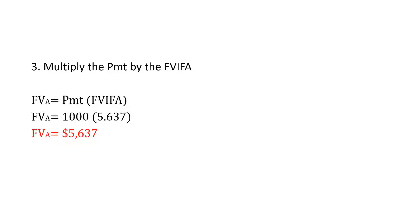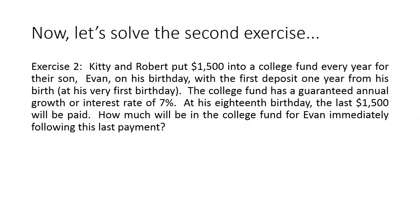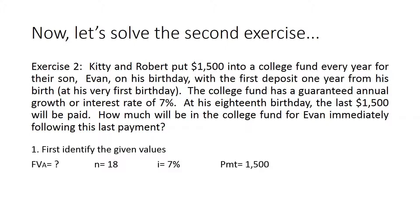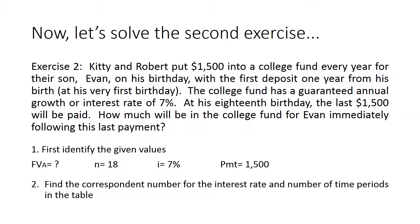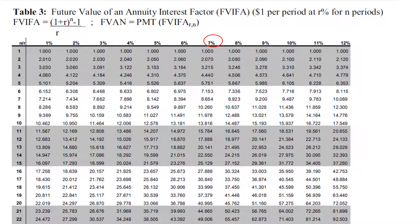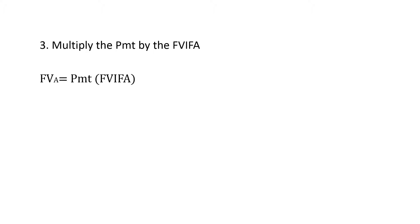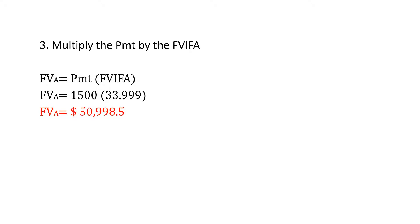Moving to exercise two, we focus on n = 18 years and an interest rate of 7%. In the table, the corresponding FVIFA number is 33.999. Multiplying the payment — $1,500 — by 33.999 gives an answer of $50,998.50. That's it for today. I hope you found the video very useful. If you have any questions, please write them in the comments below. Thank you.